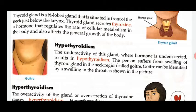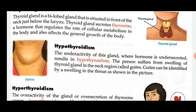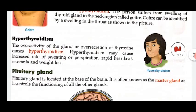Goiter can be identified by a swelling in the throat, as shown in the picture. You can see in the picture how the neck swells up — this is what happens when there is a deficiency of thyroid hormone in the body. Hyperthyroidism is the opposite condition — it occurs when thyroxine secretion is excess.